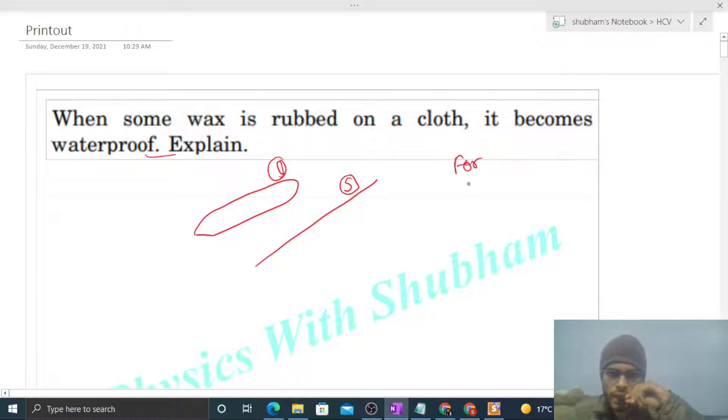We have two types of force: one is cohesive and the other is adhesive. Cohesive force is the force between similar molecules - that will be your cohesive force. And adhesive force is between different molecules. The force of attraction between different molecules, we call that adhesive force.